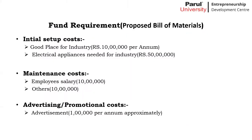This is our proposed bill of materials for our smart shopping cart. Our potential cost for a good place for the industry is about 10 lakhs per annum. Electrical prices needed for the industry are near about 50 lakhs. Maintenance costs and employee salaries are about 10 lakhs, and other costs like stipends and miscellaneous items will be near about 10 lakhs. Our smart shopping cart advertising and commercial costs will be within 1 lakh per annum extra.